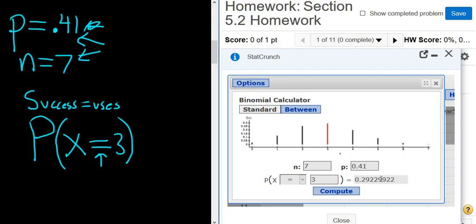So 0.2923. Let me write that down. So 0.2923. Okay, let's type it in. 0.2923. That's it.